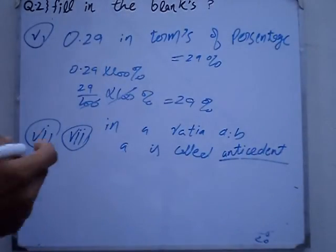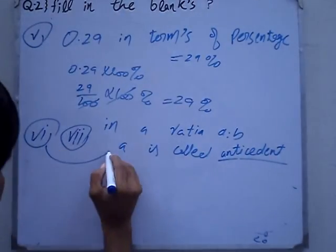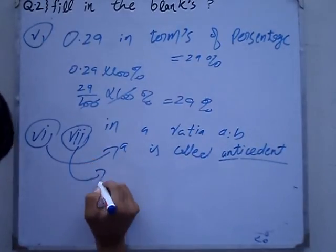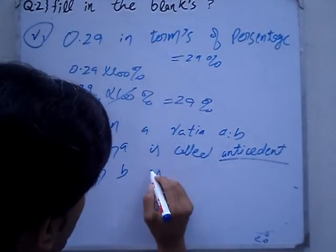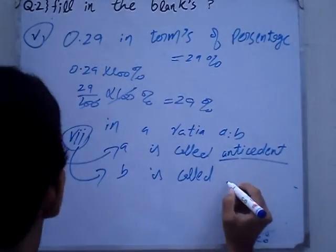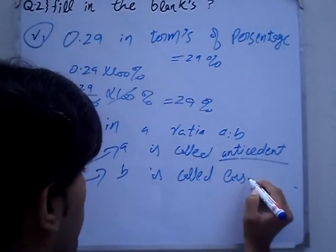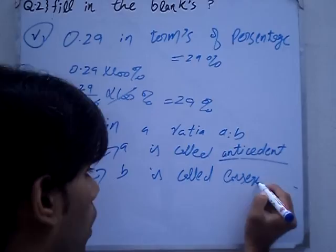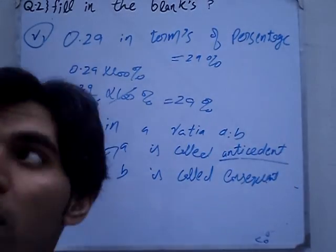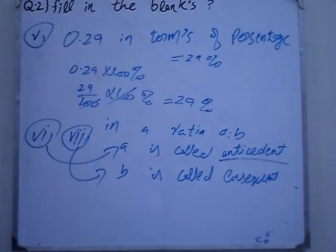And b is called the consequent. In a ratio, the first term is the antecedent and the second term is the consequent.